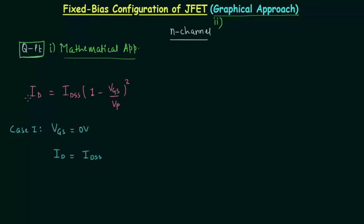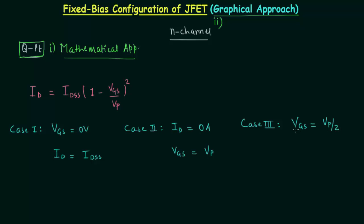In Case 2, the drain current id is equal to zero amps. In this scenario you will find that voltage Vgs is equal to Vp, the pinch-off voltage. In Case 3, voltage Vgs is equal to Vp/2, half of the pinch-off voltage. Using the equation, the drain current id equals Idss × (1 − Vp/2 ÷ Vp)², and Vp cancels out.